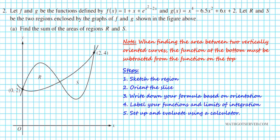Let's take a look at part A of number two. Question two reads: let f and g be functions defined by f of x equals one plus x plus e to the x squared minus 2x, and g of x equals x to the fourth minus 6.5x squared plus 6x plus 2. Let R and S be two regions enclosed by the graphs of f and g shown in the figure. Find the sum of the areas of regions R and S.